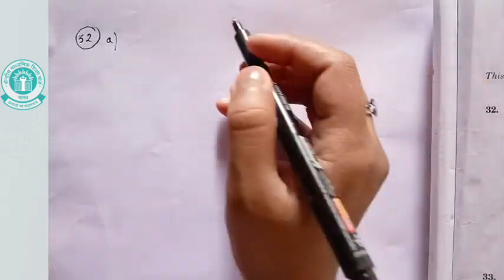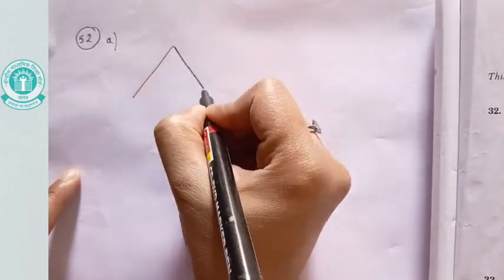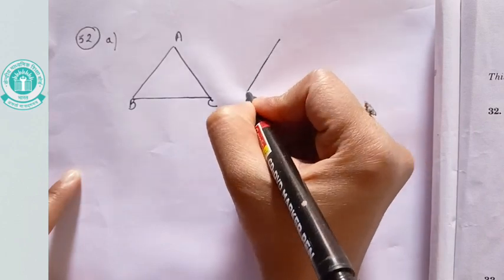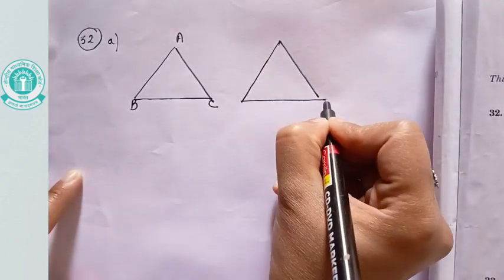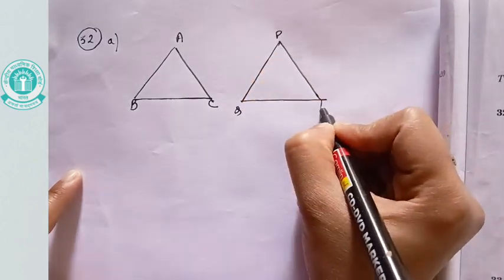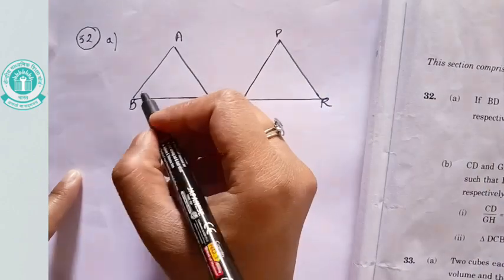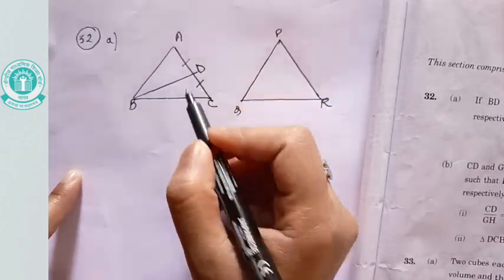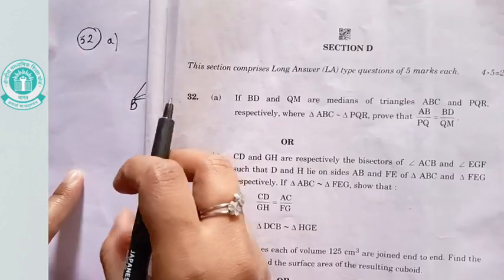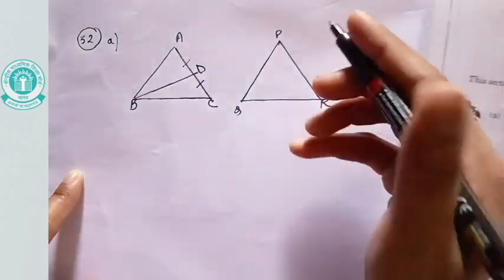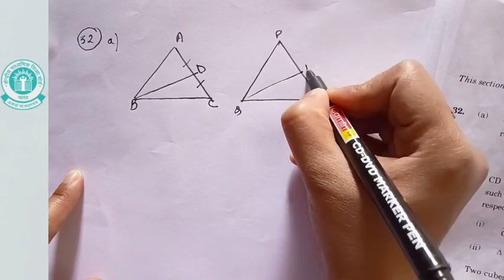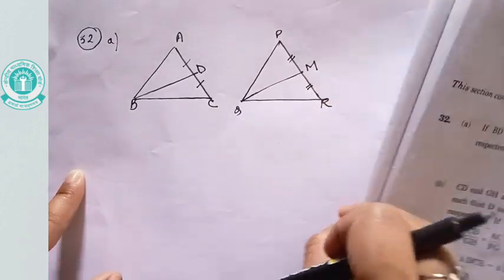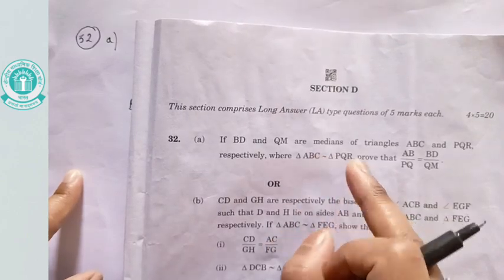Let's draw these two triangles and then we will discuss further. We have two triangles: triangle ABC and triangle PQR. Median BD is given — a median bisects the opposite side, so AD equals DC. Another median for triangle PQR is QM, which also bisects the opposite side. It is further given that triangle ABC is similar to triangle PQR.